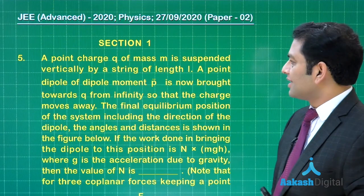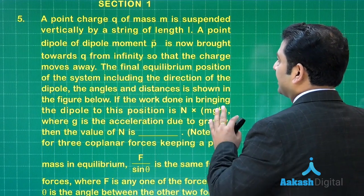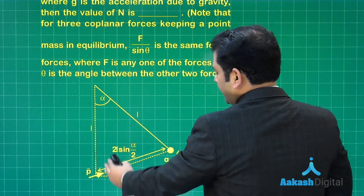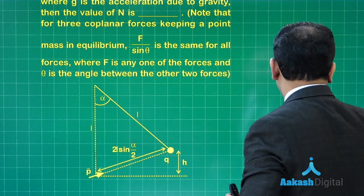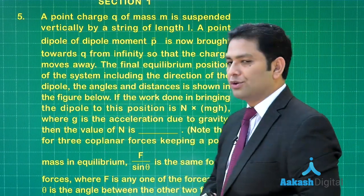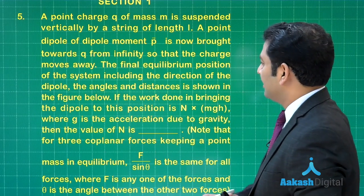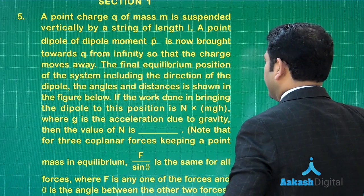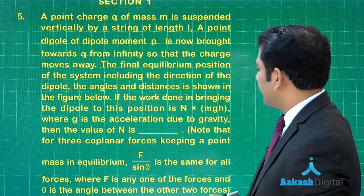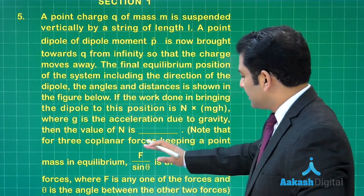The next question is quite a nice one involving a little calculation. There is a point charge q of mass m suspended by a string of length l. A dipole is brought towards q from infinity. As the dipole approaches, the point charge deflects away and finds a new equilibrium position. Based on that we need to find the total work done, reported as n × mgh, so we need to find the value of n.